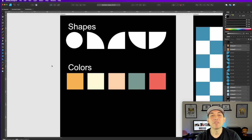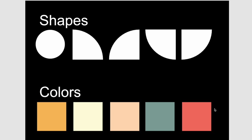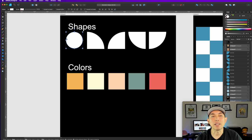Here I am in Affinity Designer. You can see I have five shapes here — I'll show you how to make each of them. I picked five colors as well. In the comments you're going to say shape one color one, or shape two color five, something like that, but first I'll show you how to make these so you can do it yourself.